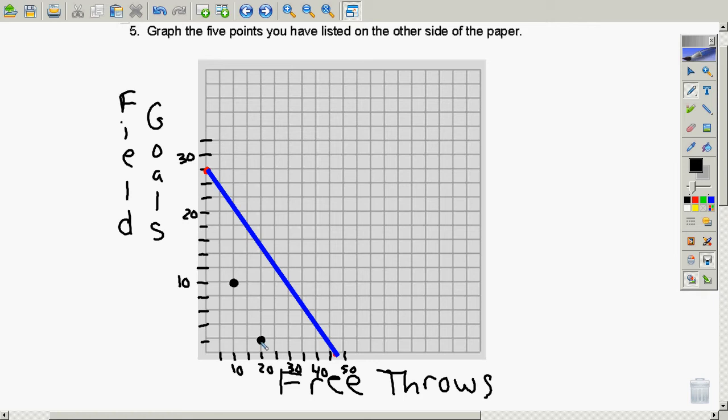But if he made, let's say, 50 free throws and 20 field goals, let me do a different color for that. That would be 50 free throws, 20 field goals. That would be over here. That would be winning.